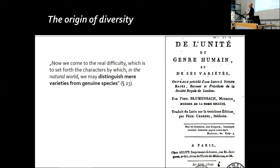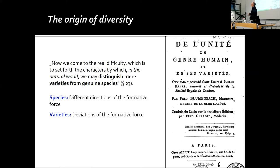Returning to the original question — how to discriminate between species and variety, and prove that there is only one species of mankind — if we go back to the formative drive, we see that it is not really helpful. If species are different directions of the formative force and varieties are deviations, there is no clear difference between these definitions of how varieties and species originate. So the formative force does not really help to define what are species and what are varieties — it is actually useless in this connection.